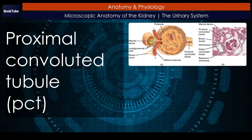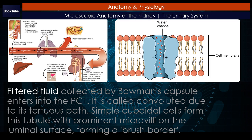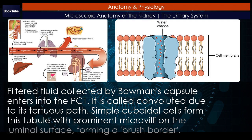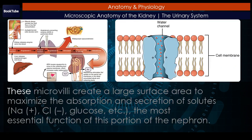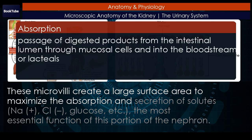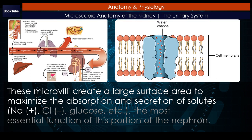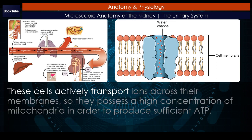Proximal convoluted tubule (PCT). Filtered fluid collected by Bowman's capsule enters into the PCT. It is called convoluted due to its tortuous path. Simple cuboidal cells form this tubule with prominent microvilli on the luminal surface, forming a brush border. These microvilli create a large surface area to maximize the absorption and secretion of solutes such as Na⁺, Cl⁻, glucose, etc. — the most essential function of this portion of the nephron. These cells actively transport ions across their membranes, so they possess a high concentration of mitochondria in order to produce sufficient ATP.